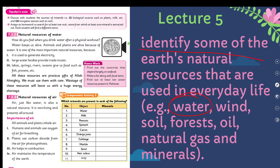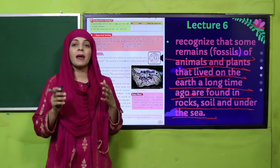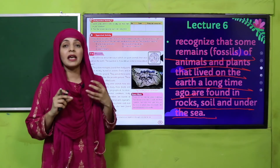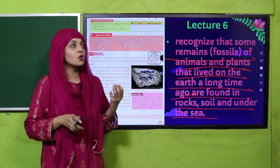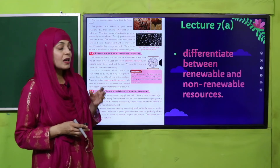In lecture number six, students will recognize that some remains — fossils — of animals and plants that lived on the earth a long time ago are found in rocks, soil, and under the sea. Kis tariqa se jo bhi pehle zamane mein past mein animals aur plants the jo die ho gaye — hum unke baare mein fossils se jaante hain. Fossils ko in detail lecture number six mein discuss kareinge.